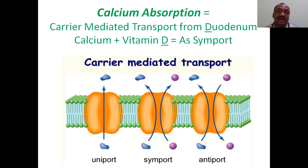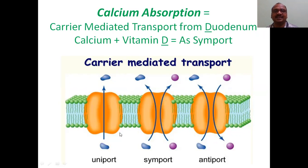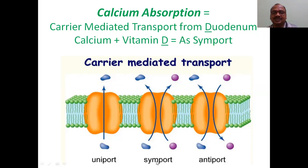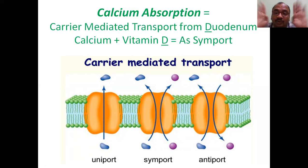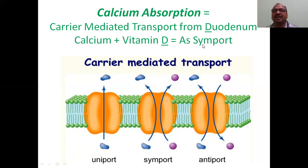Calcium absorption will be enhanced by vitamin D3. Vitamin D and calcium together undergo carrier-mediated transfer. This is the intestine — calcium and vitamin D enter the blood circulation from the intestine via symport. Symport means two substances transported together in the same direction. Uniport means singly, antiport means opposite directions. Calcium plus vitamin D work as symport — they enter the systemic circulation together from the intestine. This absorption takes place in the duodenum.